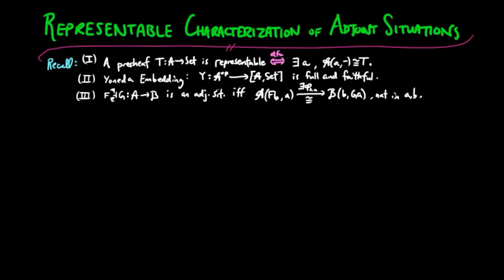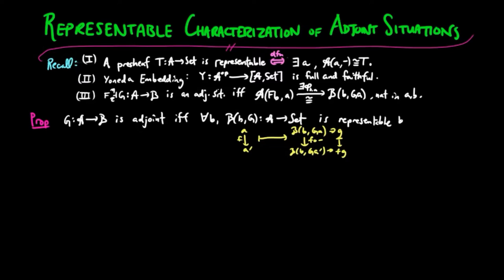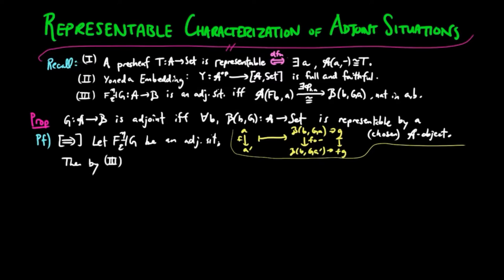Then we can prove the following characterization of adjoint functors. G is adjoint if and only if, for each B object B, the pre-sheave B(B, G(-)) on A is representable.